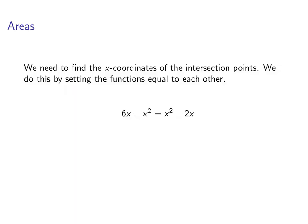So we actually need to find the x-coordinates of these intersection points. We'll do this by setting the functions equal to each other. That is, we're going to set 6x minus x squared equal to x squared minus 2x, and we'll solve for x.